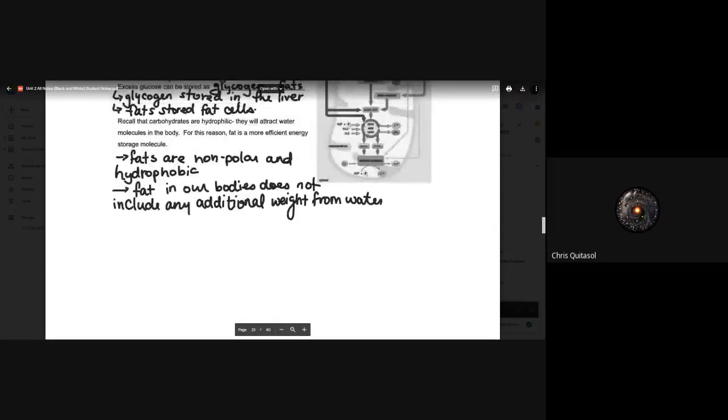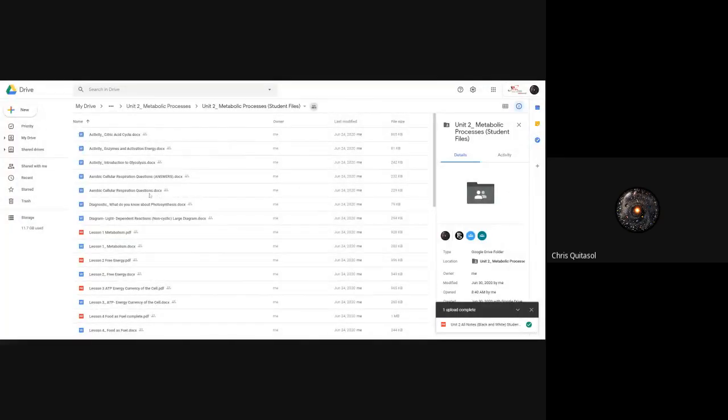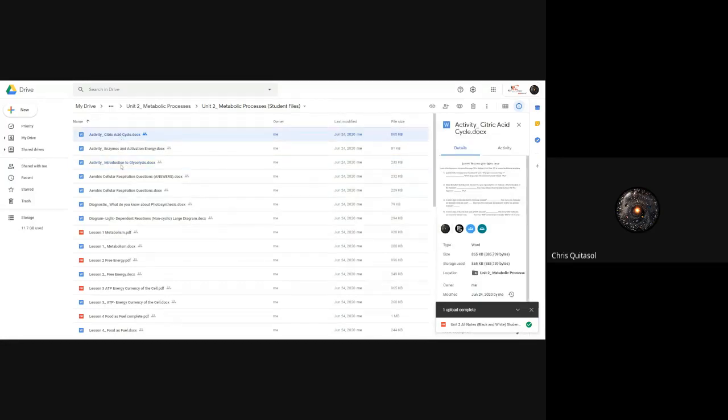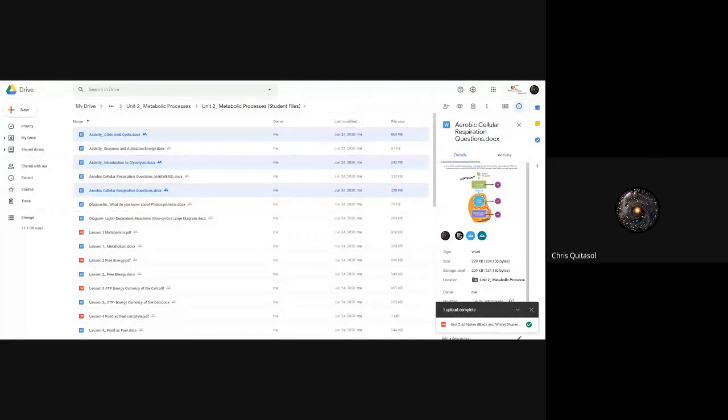That is it for lesson seven. Sorry about the little hiccup towards there at the end. But there are some activities as well as some other stuff within the student folder which I can pull up right now and show you. The aerobic cellular respiration questions have answers to it. The introduction to glycolysis, my hope is that you've already finished that and you've also looked at that citric acid cycle. But all of these additional questions can be utilized for your practice and for your homework now. Okay folks, that's it. I'm going to stop recording and I will answer your questions if you have them.